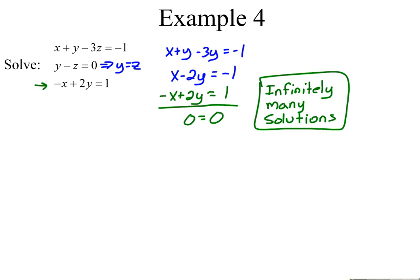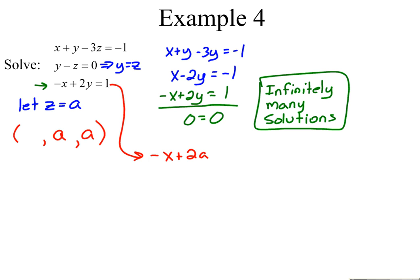For systems of three equations, three unknowns with infinitely many solutions, we find a general solution by letting z equal a. Your final ordered triple will always have a z-coordinate of a. Since y equals z in this case, y is also equal to a. Plugging into the bottom equation: negative x plus 2 times a equals 1. Solving for x gives x equals 2a minus 1. So our ordered triple is (2a − 1, a, a).